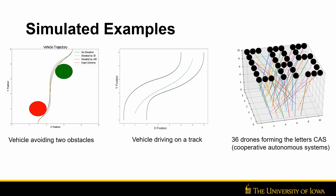The second example shows a vehicle driving on a track — this is an example of a vehicle avoiding two static obstacles. The third example is proof that this is able to work in three dimensions and for large dimensional problems.